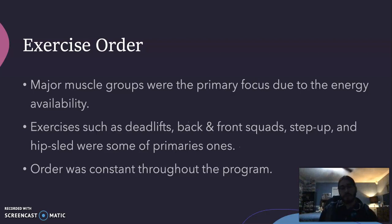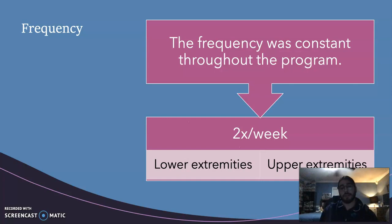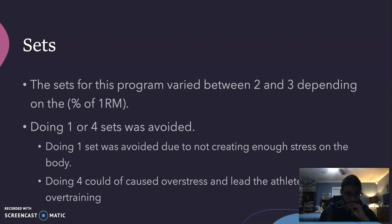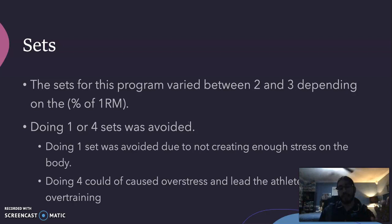The frequency was constant throughout the program at two times per week for both lower and upper extremities. Sets varied between two and three depending on the percentage of one-repetition maximum. I avoided one set because it would not create enough stress on the body, and avoided four sets because since he had just returned to training, I did not want the athlete to overtrain or sustain a new injury.